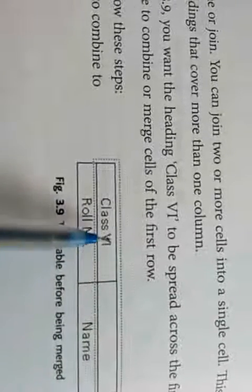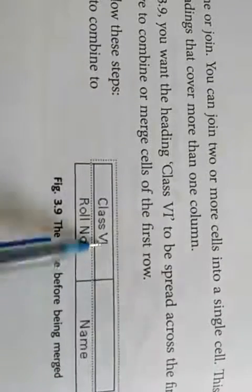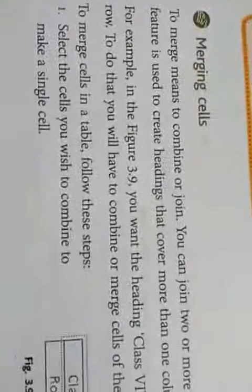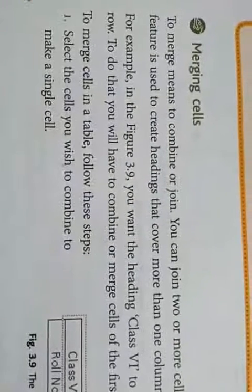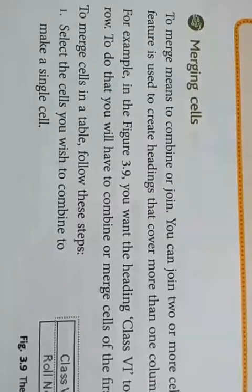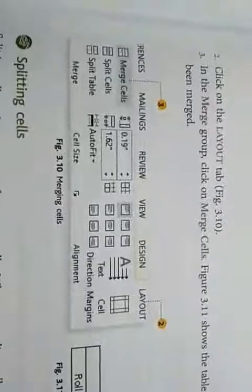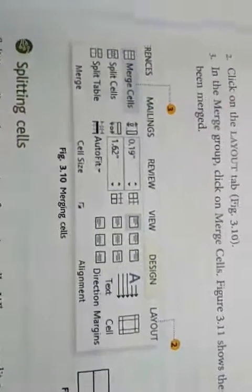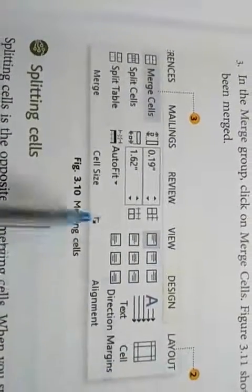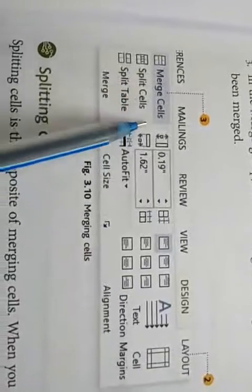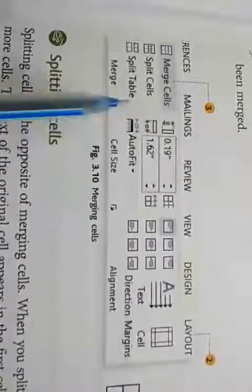Here we want to merge the two cells of the first row — the first cell and the second cell. We can join them; this is also called combining two or more cells into one in our table. For that, first we have to select both cells of the first row, then click on the Layout tab and select the Merge Cells option. When we click on Merge Cells, our cells will be merged into a single cell.